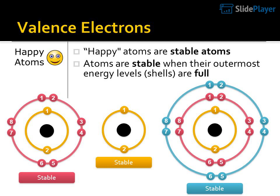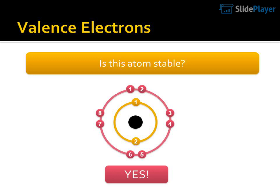Looking at stable atom examples: energy levels 1, 2, then shells of 8, 8, then level 3 with 8 — stable. Another example: 7, 4, 2, 6, 5, 6 — stable. Stable. Stable. Valence electrons.